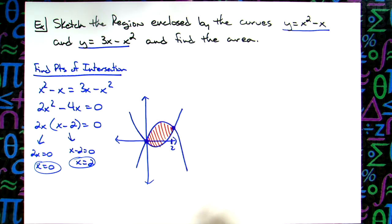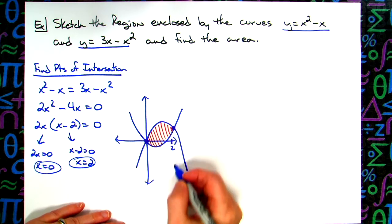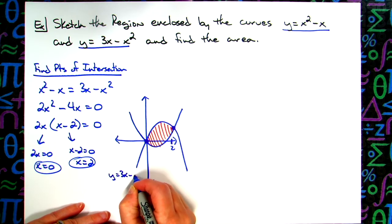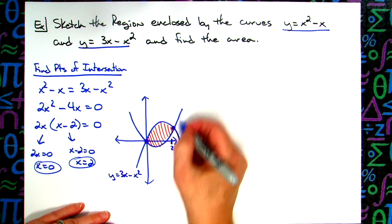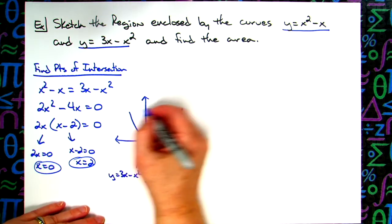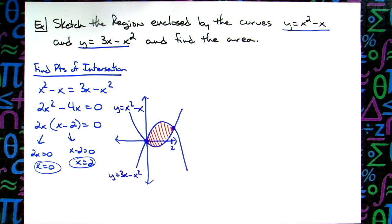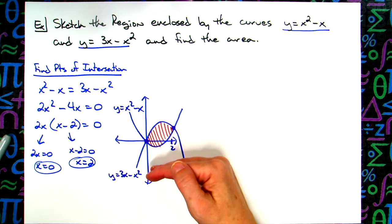Now if we go ahead and label these, this is the upside down parabola. So this one's going to be y equals 3x minus x squared. This one up here is going to be y equals x squared minus x. Sometimes it is going to be helpful to go ahead and label those curves because when we calculate that area we're going to need to do top curve minus bottom curve.